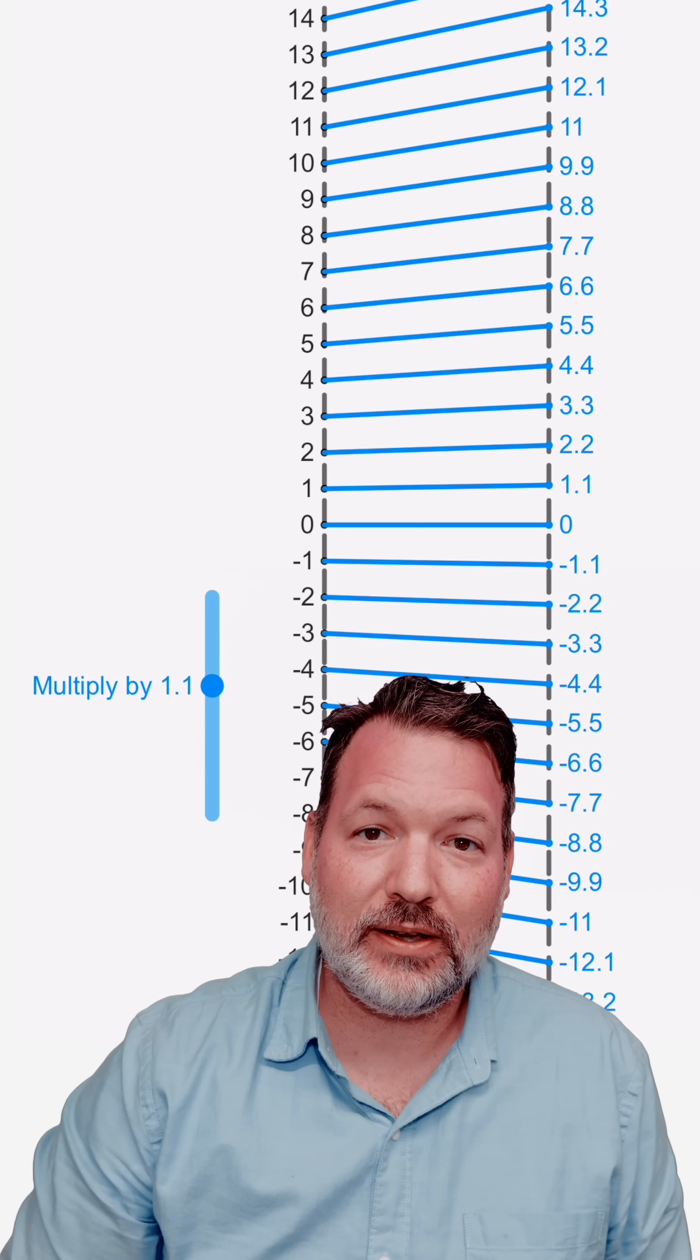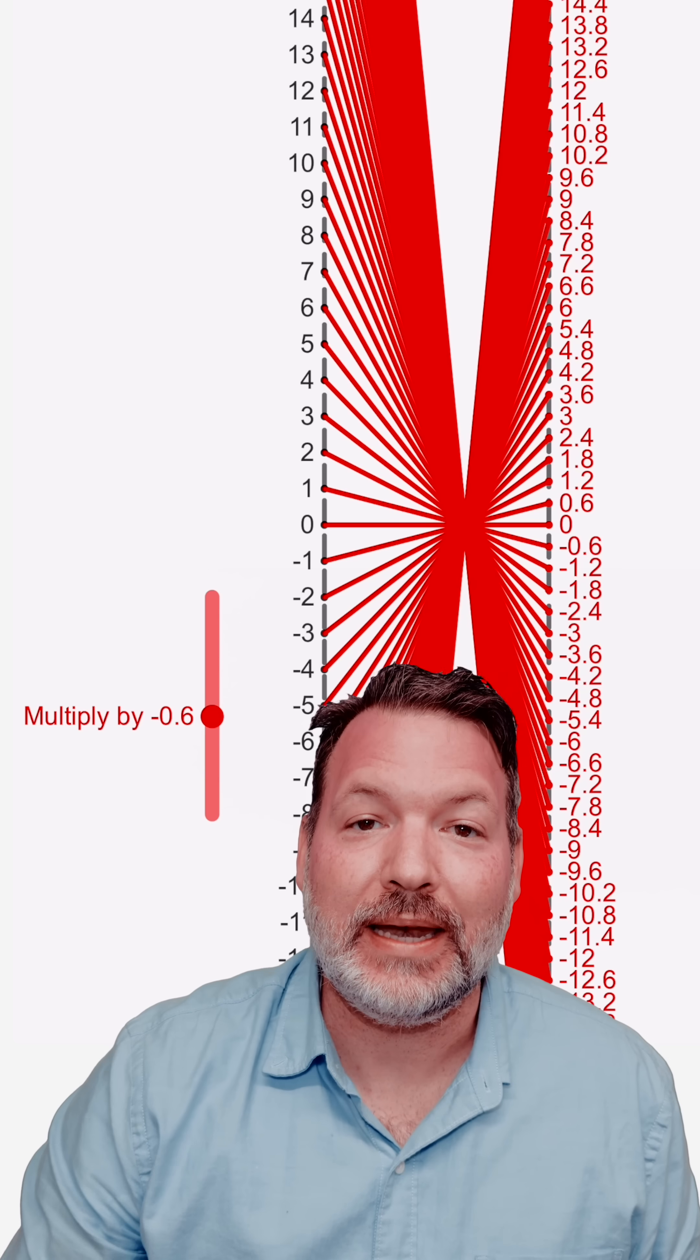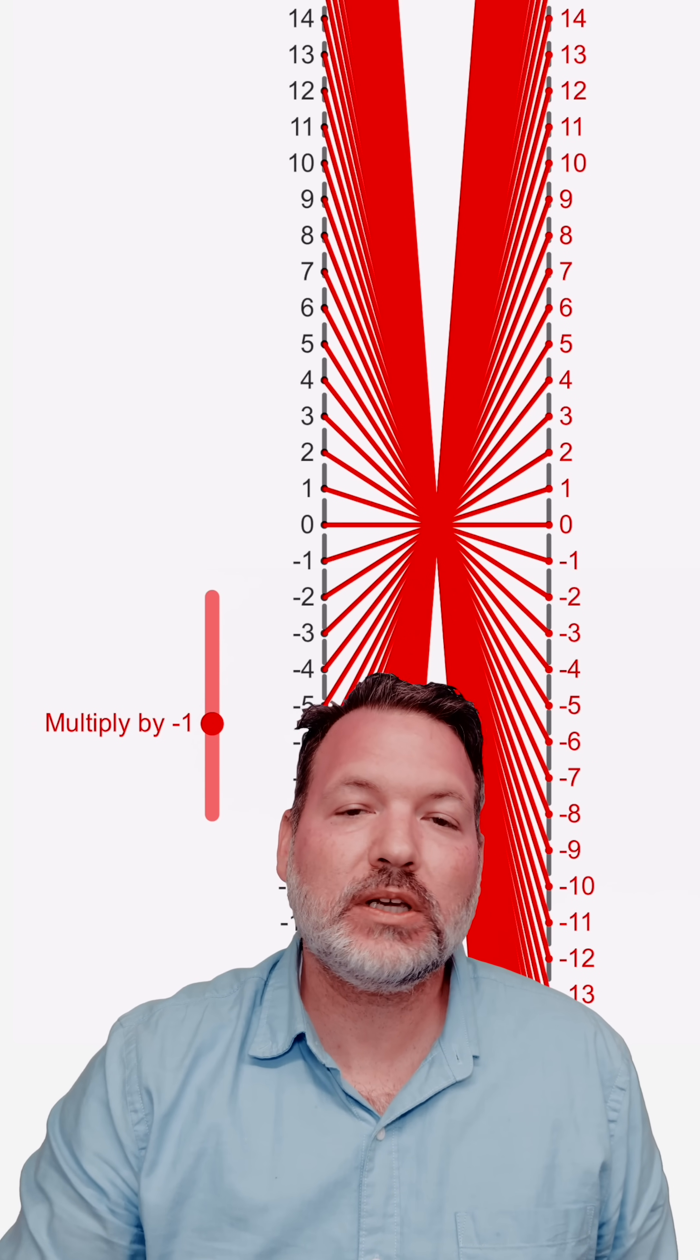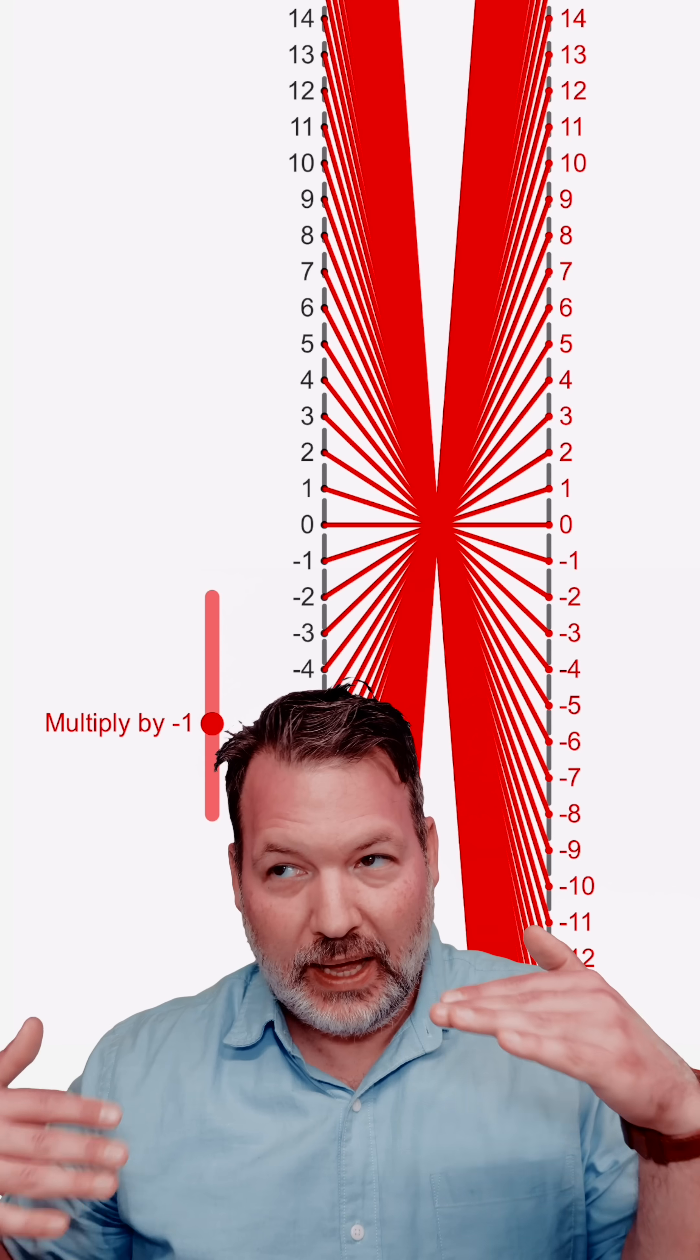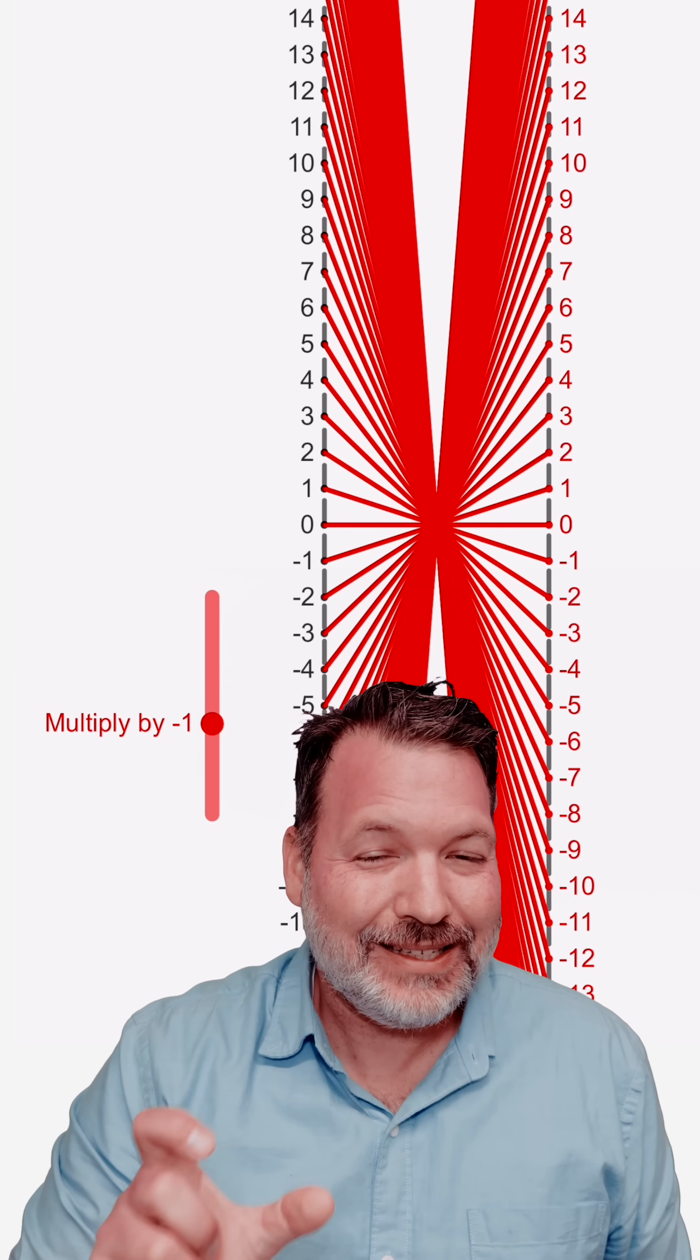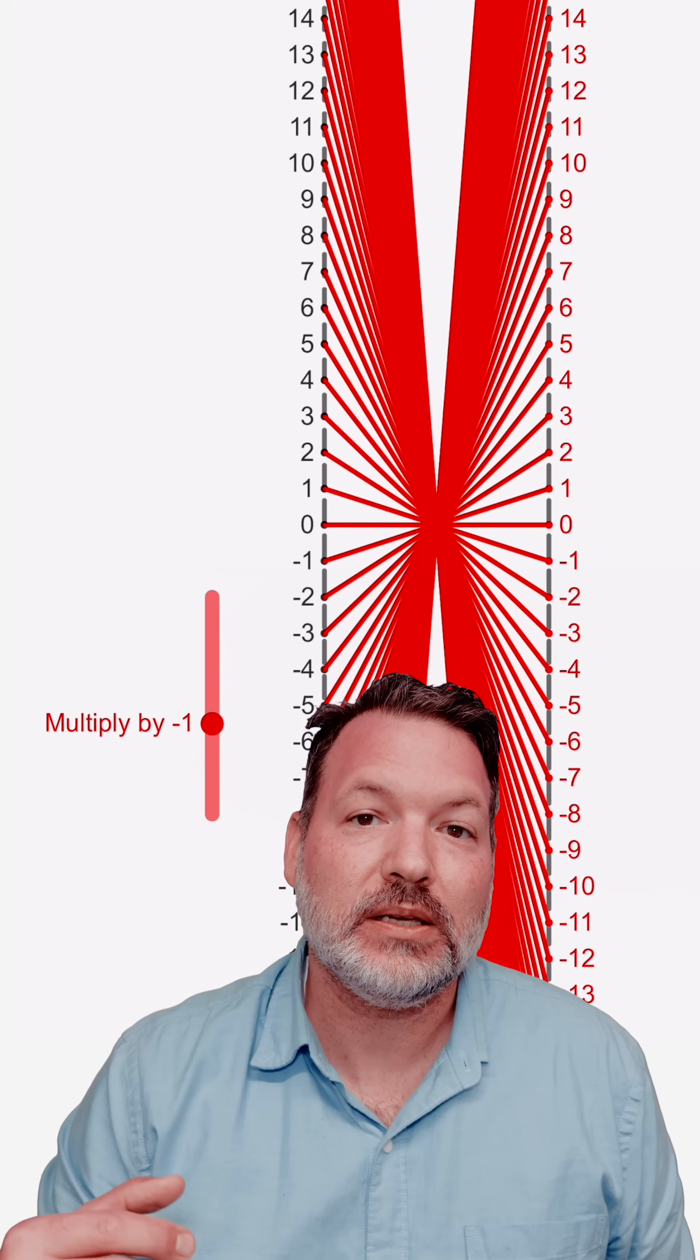But what happens if we push even further past that special point? We get multiplication by negatives. If we scale by something as simple as negative 1, what's going on on the number line? Everything that was above 0 is now going to get mapped below 0. And similarly, everything that was below 0 is now going to get mapped above 0. It's that last bit that we mean when we say a negative times a negative is a positive.